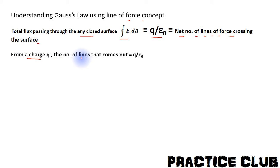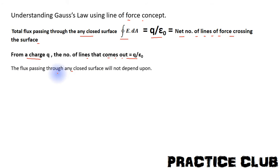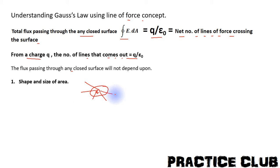From a charge q, the number of lines that come out is q by epsilon. If we use q by epsilon lines for the charge, we can very easily explain how the flux passing through any closed surface does not depend upon the shape and size of the area.